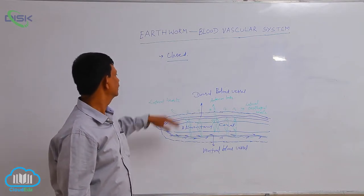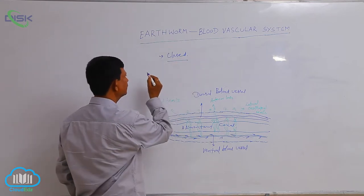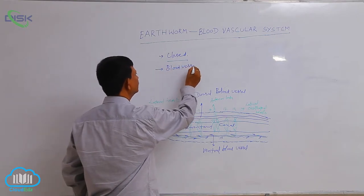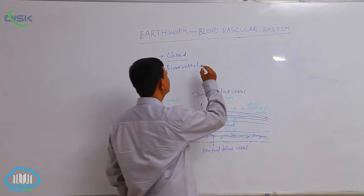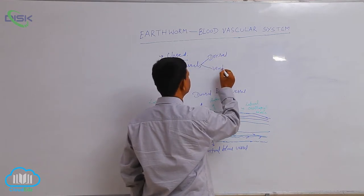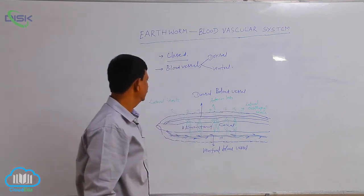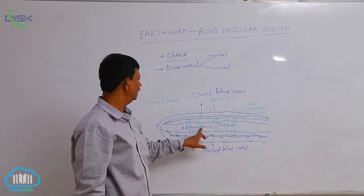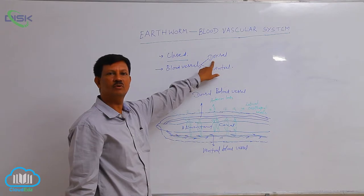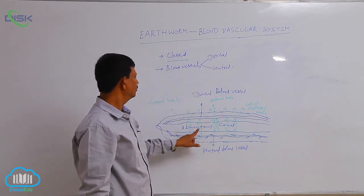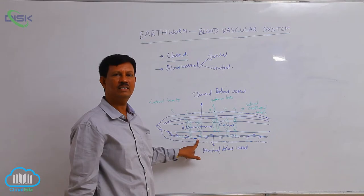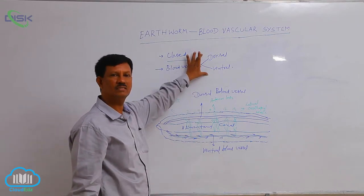In earthworm, the important blood vascular system consists of blood vessels. There are different types of blood vessels found in earthworm. The important ones are the dorsal blood vessel and the ventral blood vessel. The dorsal blood vessel is present above the alimentary canal and is situated on the dorsal side of the body. The ventral blood vessel is present below the alimentary canal and is situated on the ventral side of the body.